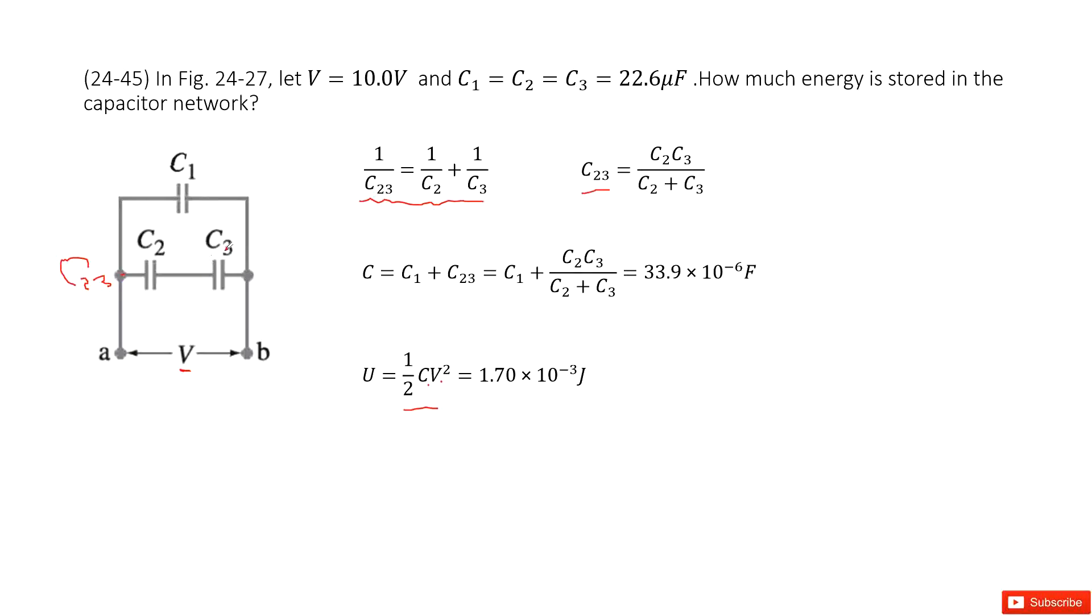In this capacitor network, we can see capacitor C1 is a parallel connection with C23. So the equivalent capacitance can be written as C1 plus C23, and input C23 inside to get the answer there.